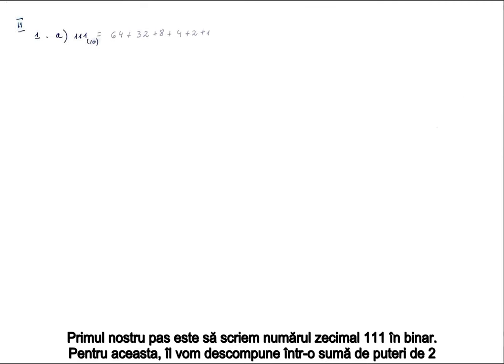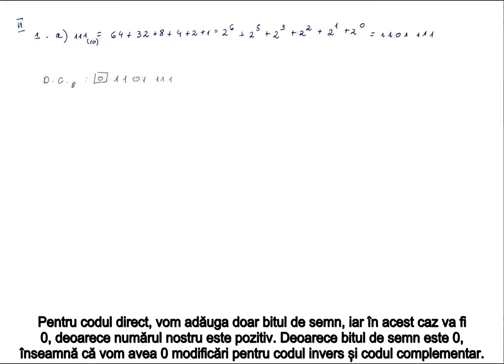Our first step is to write the decimal number 111 in binary. For this, we're going to decompose it in a sum of powers of 2. For direct code, we'll just add a sign bit, and in this case it is going to be 0 because the number is positive. Because the sign bit is 0, we will have no changes for inverse code and complementary code.